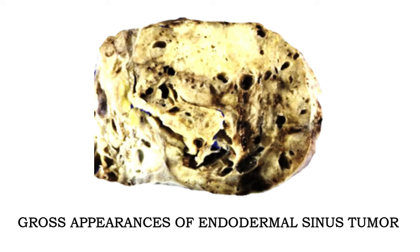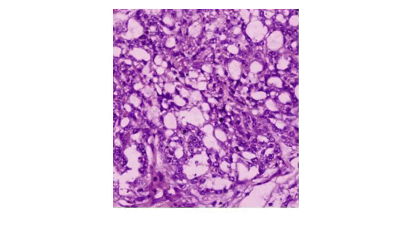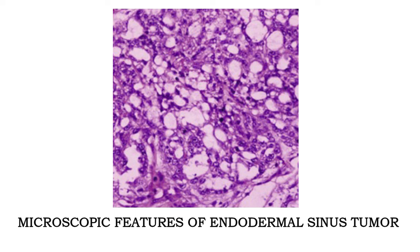This is the gross photograph of endodermal sinus tumor. You can see that the ovary is enlarged. There are brownish areas which are solid areas along with numerous cysts. In the same photograph, the solid area is marked with a brown arrow whereas the large cyst is marked with a red circle.